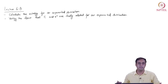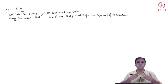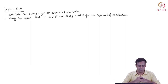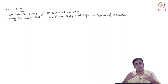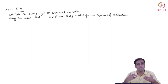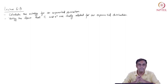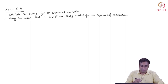We ended the previous lecture where we wanted to calculate the entropy of an exponential distribution — a random process characterized by the exponential distribution. We wanted to verify the claim that the entropy measure and the variance of this exponentially distributed random process are closely related — they are sort of measuring the same thing, which is the variability of the random process. Let us get to the calculation part of entropy.